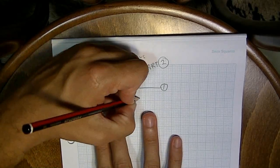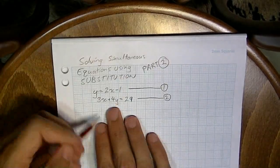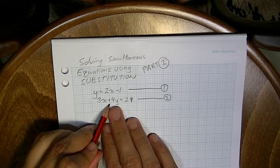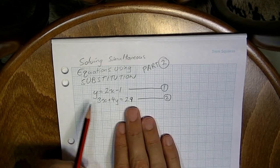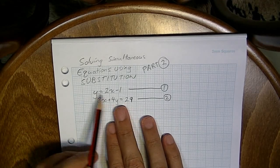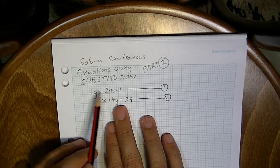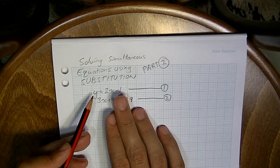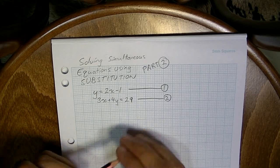The problem is with our second equation, remember to label them. Equation number two, 3x plus 4y equals 29. Now, the problem with this is that it's not written in this y equals mx plus c form, which is going to make subbing equations into each other a little more complicated.